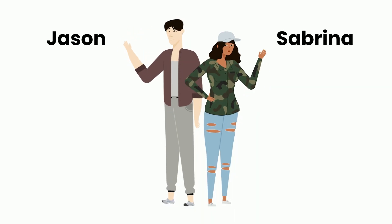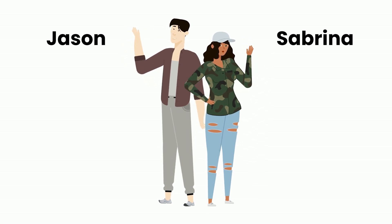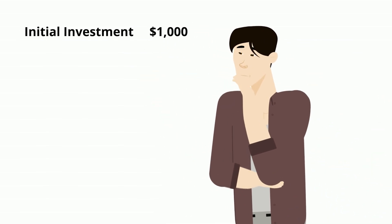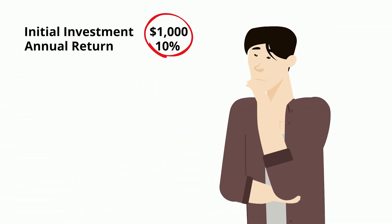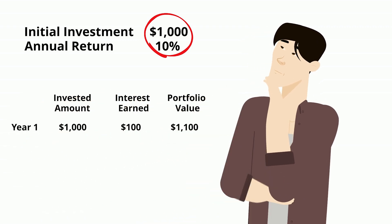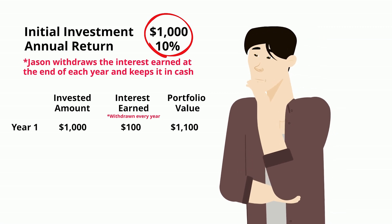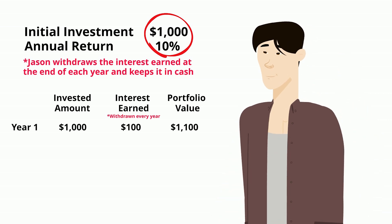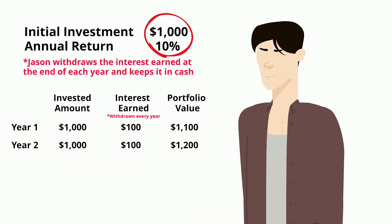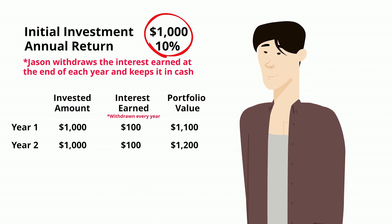Meet Jason and Sabrina. They're both 20 years old and eager to start investing with $1,000. Assume Jason's investment consistently returns 10% per year. After just one year, Jason's portfolio grows to $1,100 — $100 in interest alongside his initial $1,000 investment. Jason decides to withdraw his interest while maintaining his $1,000 investment. In the following year, Jason's investment returns another $100 in interest, bringing his total to $1,200. Staying true to his plan, he withdraws the interest once again.